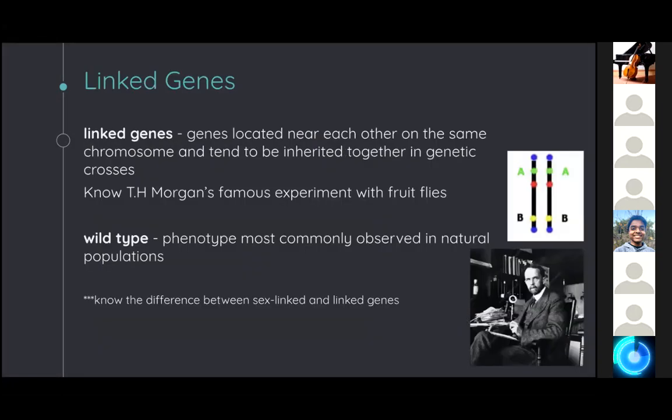Linked genes are incredibly important to understand. Remember the concept of independent assortment, where we assume every pair of alleles distributes into gametes regardless of how other alleles split. However, for this to be true, the genes must be either on different chromosomes or far apart on the same chromosome — if far apart, they'll likely be split by crossing over. Linked genes are genes located near each other on the same chromosome and therefore tend to be inherited together. The most famous example studied is T.H. Morgan's experiment with fruit flies.